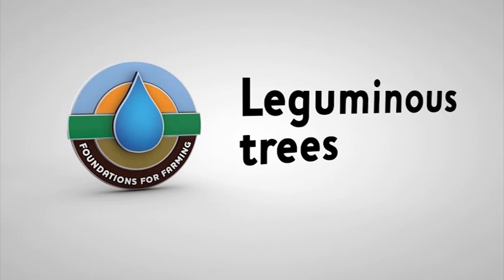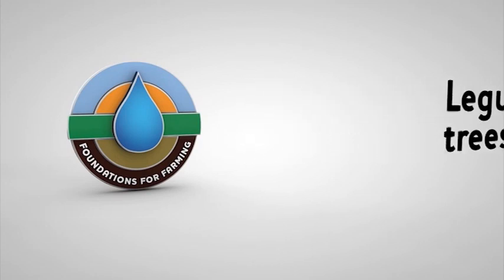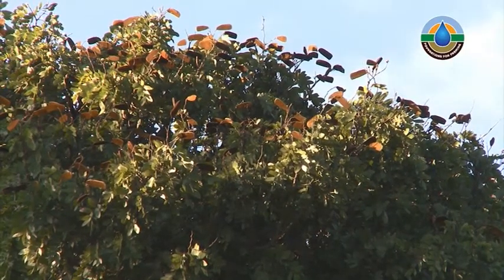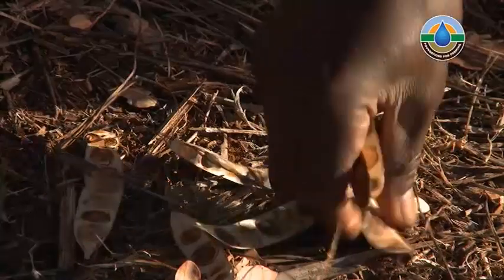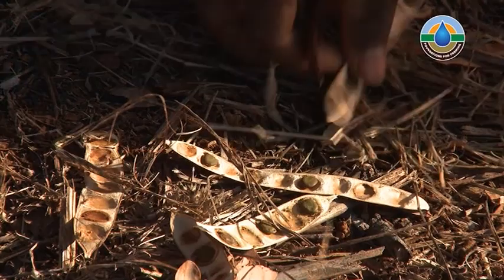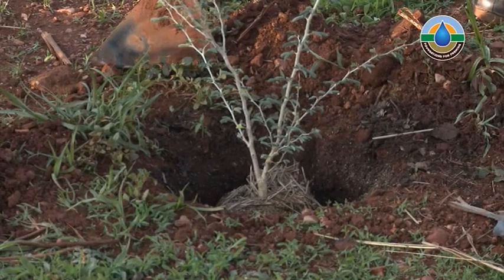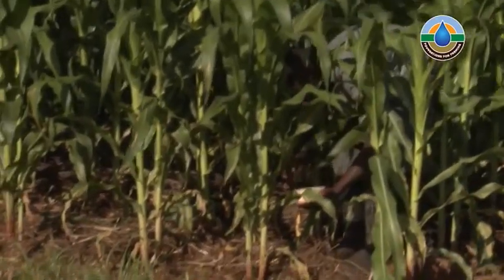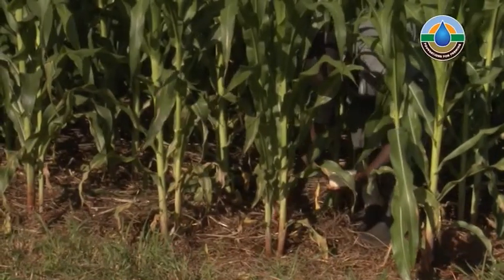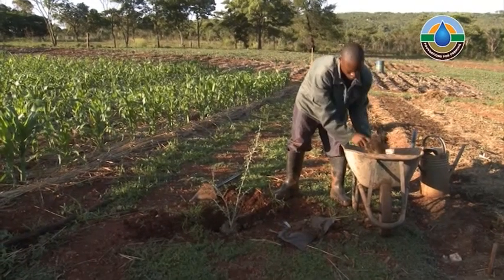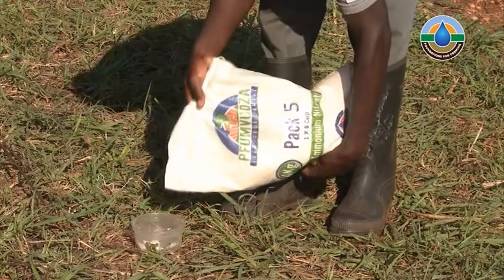In agroforestry we normally plant leguminous trees. These are trees which have pods that look like peas or beans — for example, many of the acacia species. We use leguminous trees because they fix nitrogen into the soil. Plants need nitrogen to grow and fertilizer contains nitrogen, so by planting leguminous trees, we can reduce the amount of fertilizer we need for our crops.